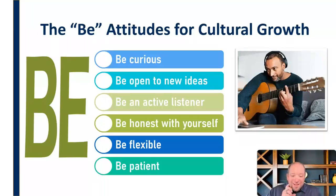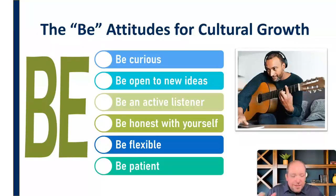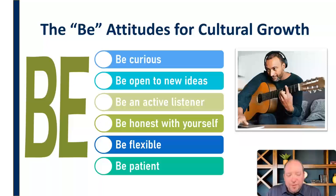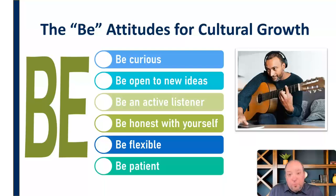So these are the 'be attitudes' — the things we have to tell ourselves: I have to be curious, I have to be open to new ideas, be an active listener, be honest with myself, be flexible, and I really do have to be patient. We need to be all of these things to help us develop the requisite attitude for developing and improving intercultural competence.